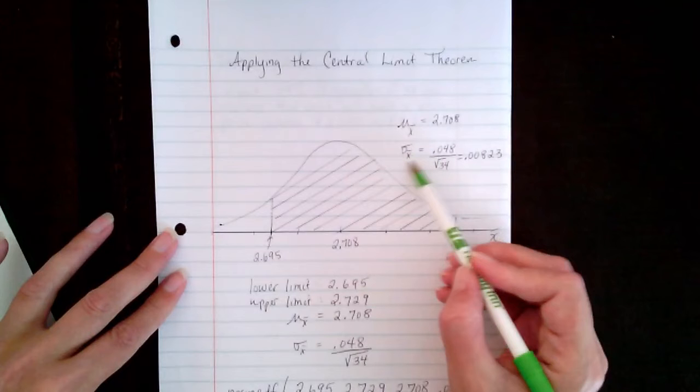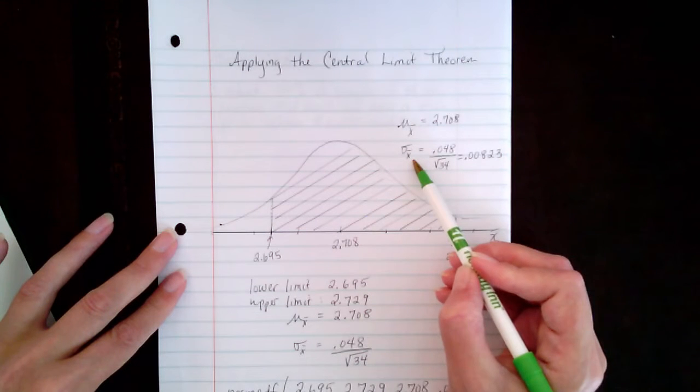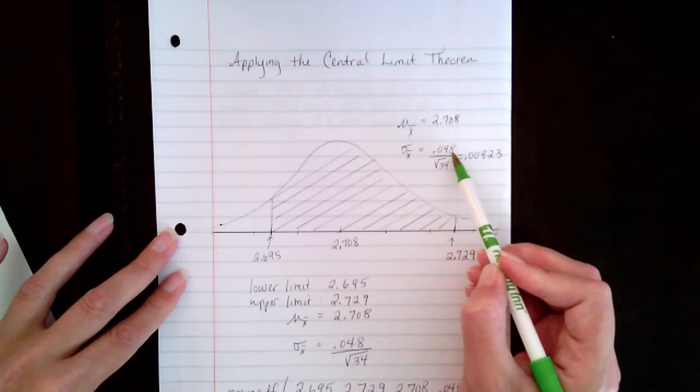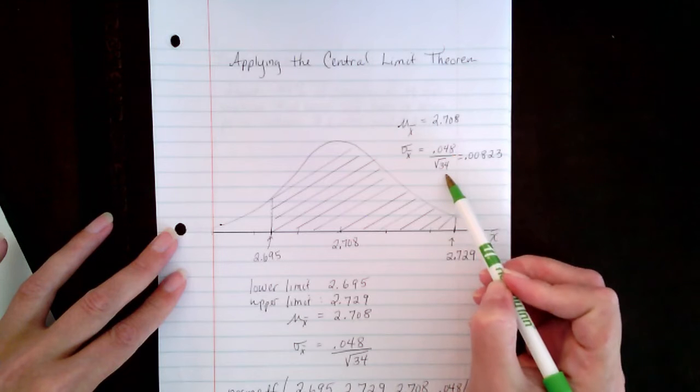And the standard deviation for the sample mean is the population standard deviation divided by the square root of the sample size.